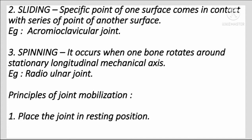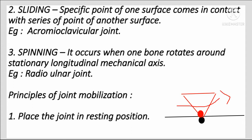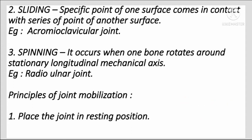The third type of motion is spinning: one point of one surface rotates over one point of another surface. For example, one point of the first surface continuously rotates over the corresponding point of the second surface — that circular rotation is called spinning.